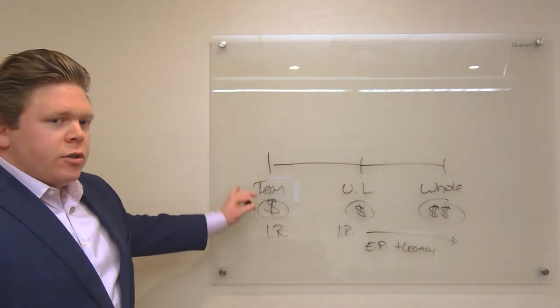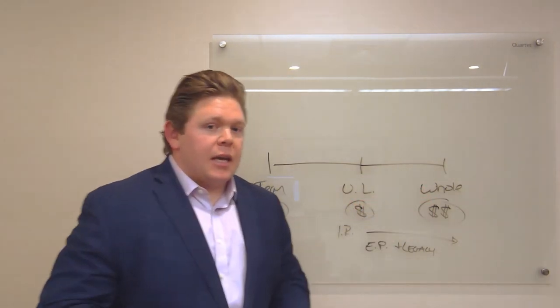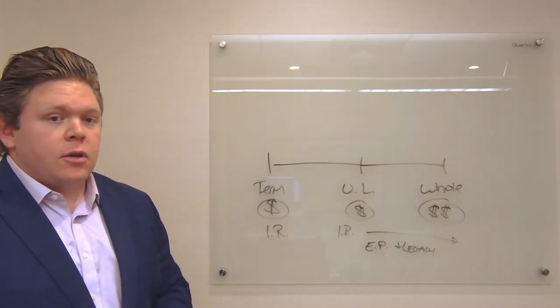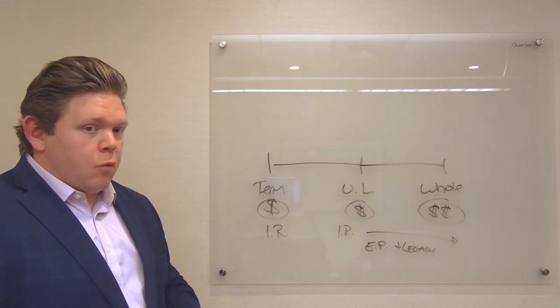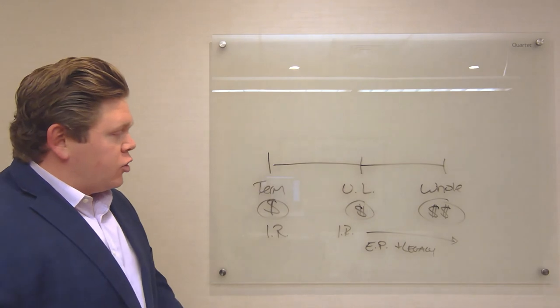Term life insurance is once again for a specific term. Universal life and whole life, they can last your entire life. So the premiums will be different for that because obviously as you're getting older, the mortality tables are changing, so on and so forth.